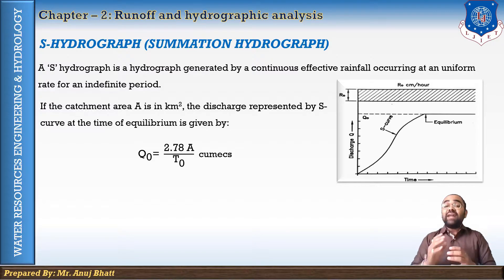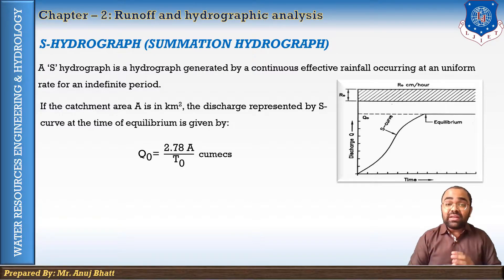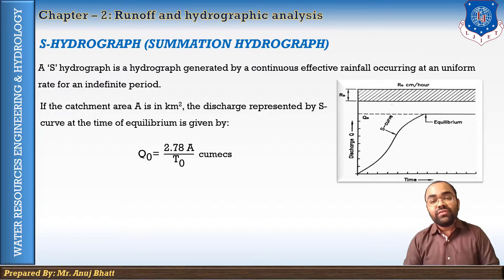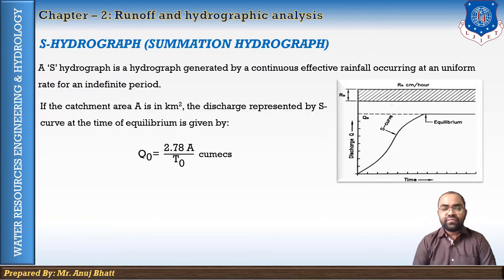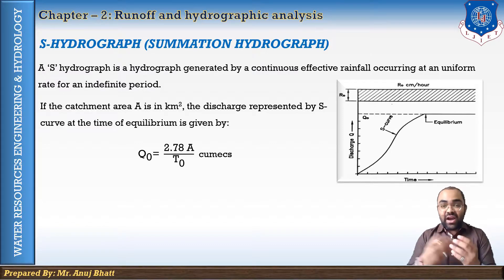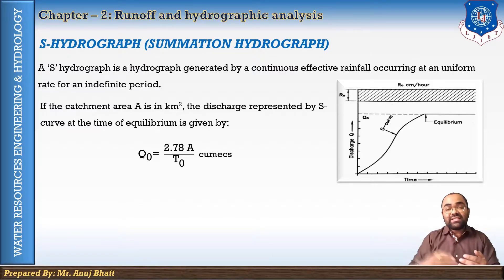It is necessary to know how many times the unit hydrograph must be successively plotted. As a general rule, the unit hydrograph may be added T times with an offset equal to the unit duration of the hydrograph. For example, if you have to plot the S-hydrograph of 12 hours and you are given a 3-hour unit hydrograph, you may successively plot the hydrograph four times.